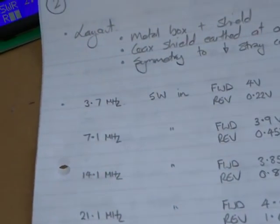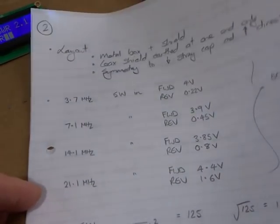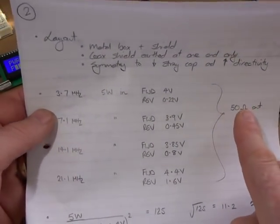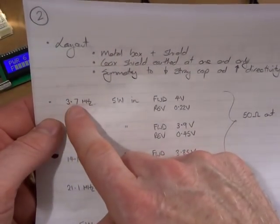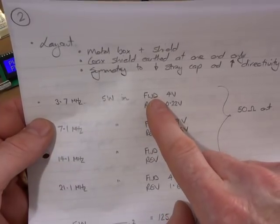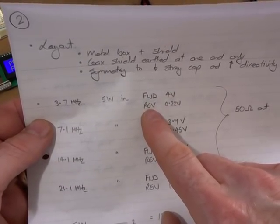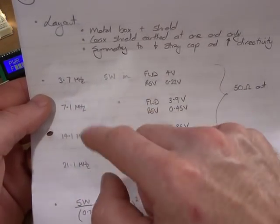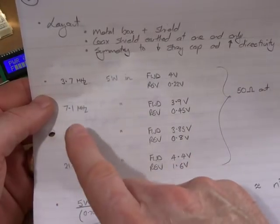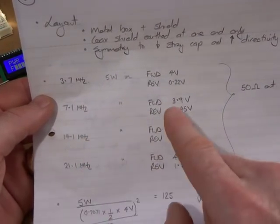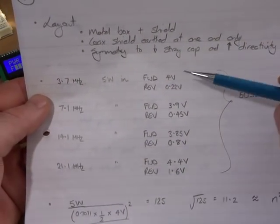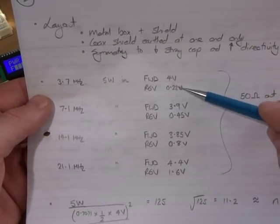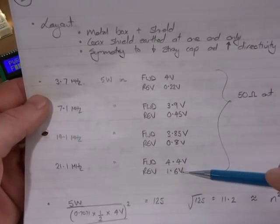For the next measurements, what I decided to do is set up 5 watts in. I just decided to go with 5 watts for a start and terminating with a 50 ohm load on the antenna port. So 3.7 megahertz with 5 watts going in, the voltage at the forward port is 4 volts and the voltage at the reflected port is 0.22 volts. I've done exactly the same thing up in frequency for the four bands that I've got available on this particular radio: 7.1, 14.1, then 21.1. The forward voltage is pretty constant - 4, 3.9, 3.85, 4.4 - reasonably constant. But of interest is the reverse voltage, you can see that slowly climbing as the frequency of operation increases.